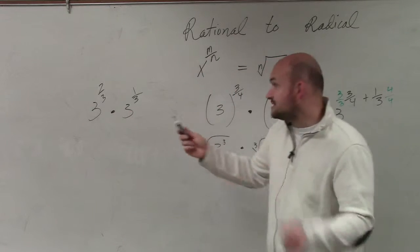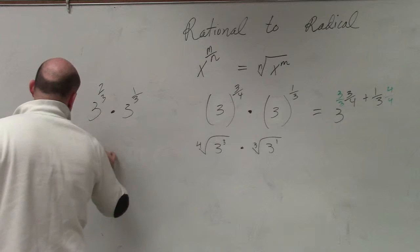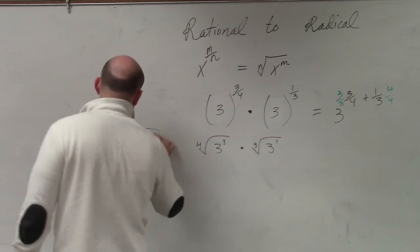If you had a problem like this, do you guys see how these denominators are the same? If you were to rewrite that in radical form, it would be the cube root of 3 squared times the cube root of 3 to the first power.